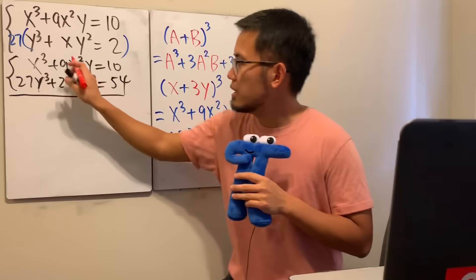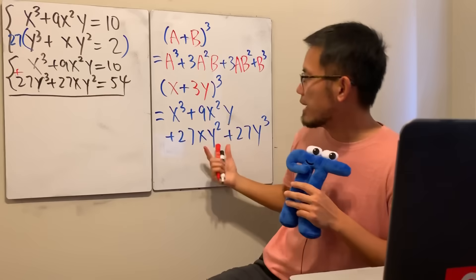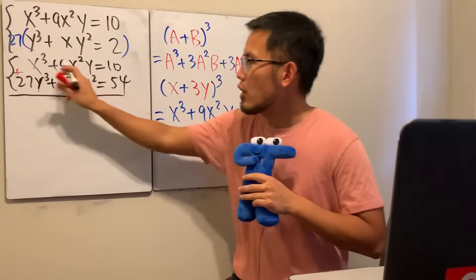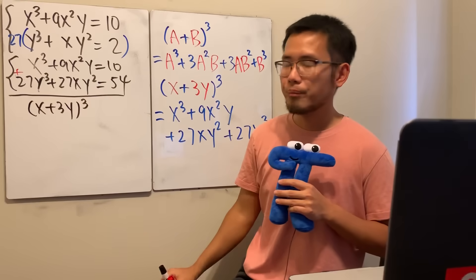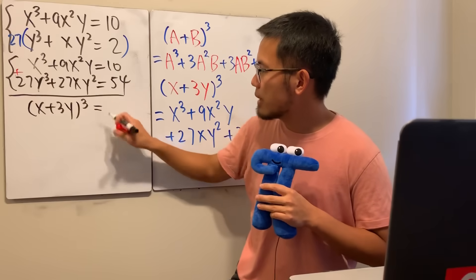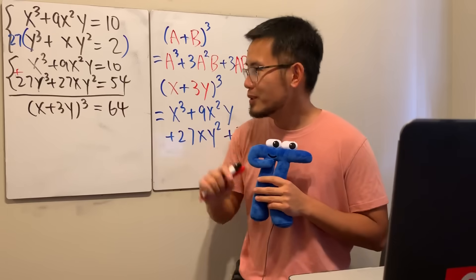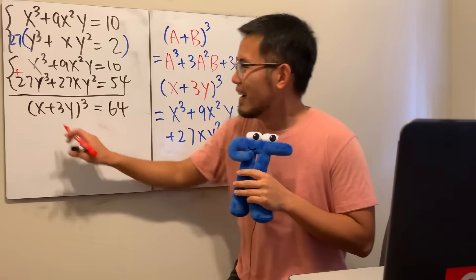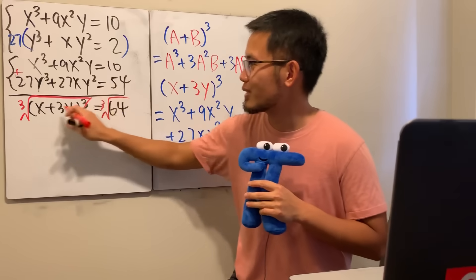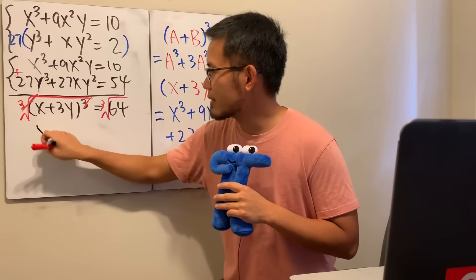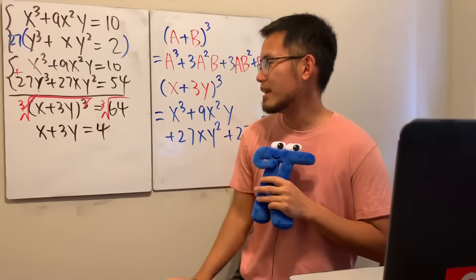If we add everything together, the left-hand side nicely equals (x + 3y)³, and on the right-hand side 10 + 54 = 64. We are just looking for real solutions, so we can take the cube root on both sides. Since we want only real solutions, x + 3y = 4.